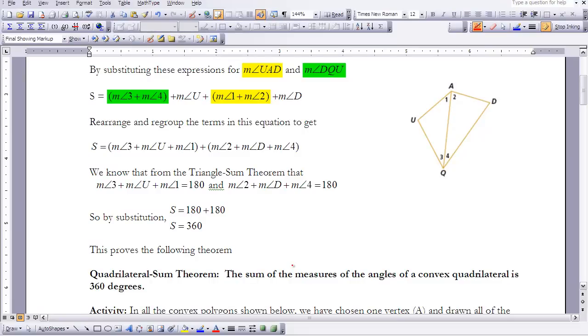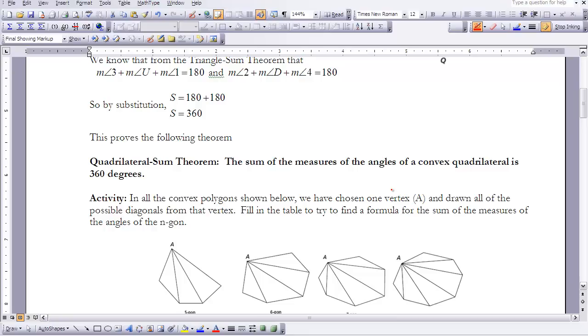Now we're going to rearrange these and regroup them. We took 3 plus U plus 1 plus 2 plus D plus 4. We know from the triangle sum theorem that 3 plus U plus 1 equals 180, and the measure of angle 2 plus D plus 4 equals 180 also. So by substitution, the sum is 180 plus 180, which gives us 360. This proves the theorem that the sum of the measures of the angles of a convex quadrilateral is 360 degrees.